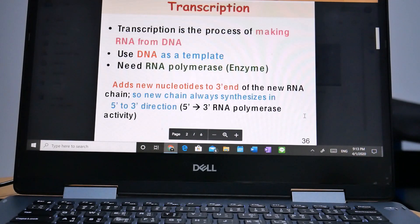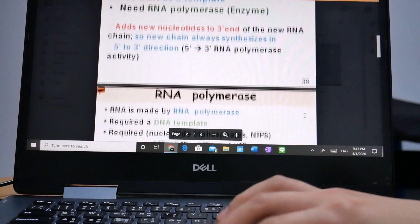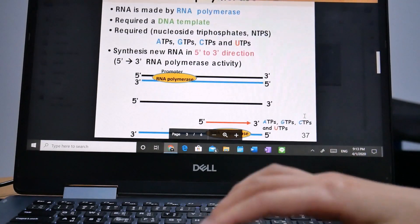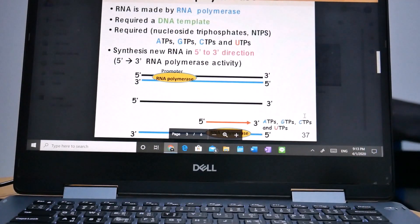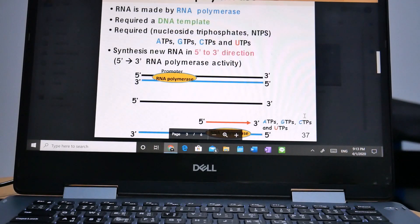Initiation is when RNA polymerase binds to a sequence of DNA called the promoter, found near the beginning of a gene. Each gene has its own promoter.